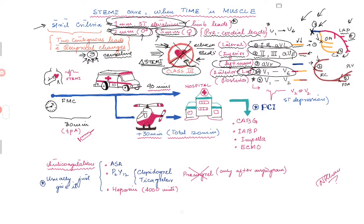For anterior and lateral wall MI, leads V1 through V6 help determine if the patient is having an anterior, anterolateral, or lateral wall MI. The lateral wall is supplied by the diagonal branches. If there is involvement of the LAD or a diagonal branch supplying most of the lateral portion of the heart, you may see ST elevation through V1 to V6.